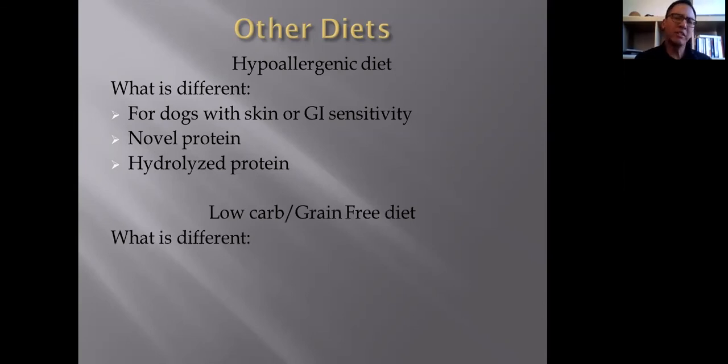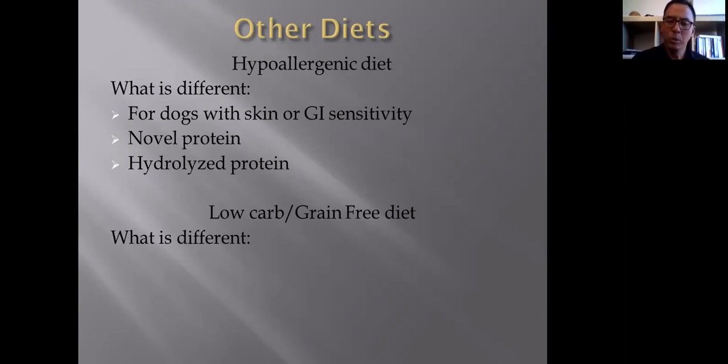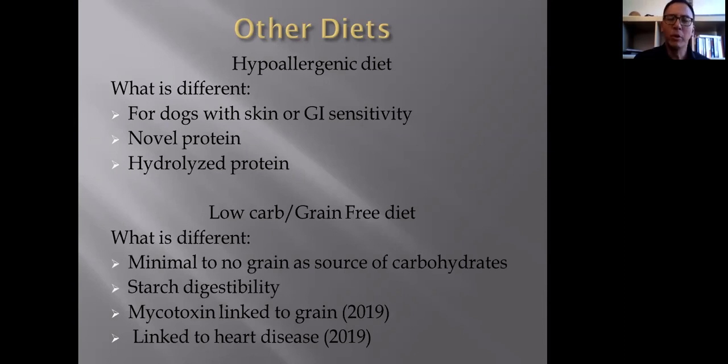We also have things like low carb or grain-free diet, so low carbohydrates or grain-free diet. What is different? Minimal to no grain as a source of carbohydrates. The idea is that nobody really wants to put grain because grain has been used as a big component of cereal-based diets, and hence it supposedly causes a lot of poop to be formed because a dog can't digest it. So they talk about grain-free or low carbohydrates.